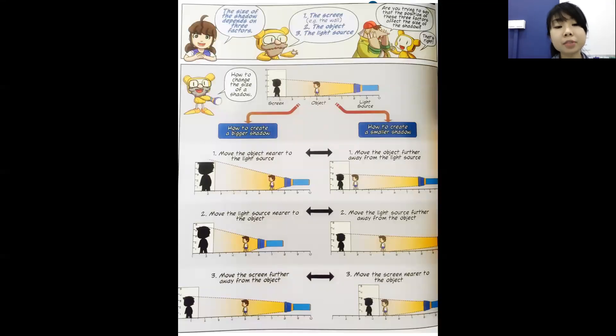The size of the shadow depends on three factors: the screen, the object, and the light source. If you look at this short cartoon drawing, it describes how to get a bigger shadow and how to get a smaller shadow. It's depicted with drawings, so I think it will allow you to visualize better.